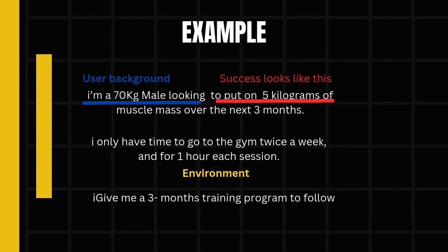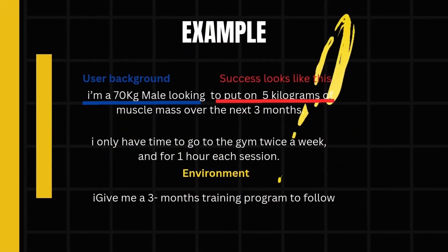Returning to our example: 'I'm a 28-year-old male, give me a three-month training program' — this is a common example of context. Or: 'I'm 28 years old, give me a three-month program to learn no-code tools.' You could include more details, but the key is to provide just enough context to narrow down the infinite possibilities.